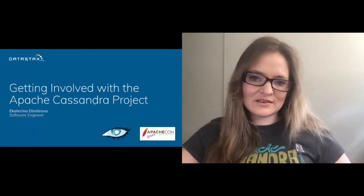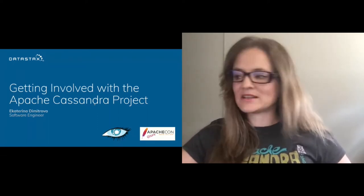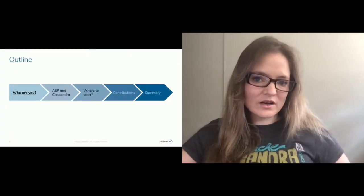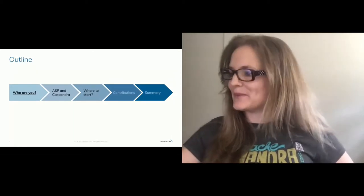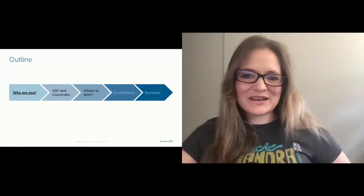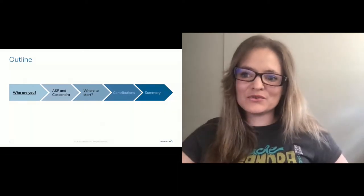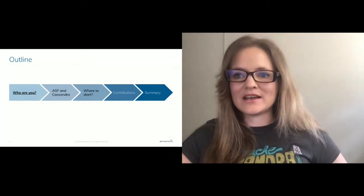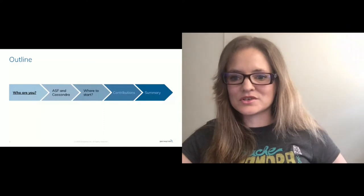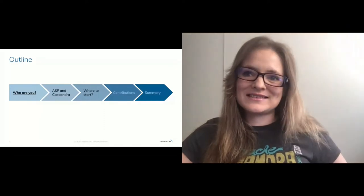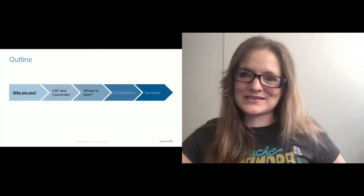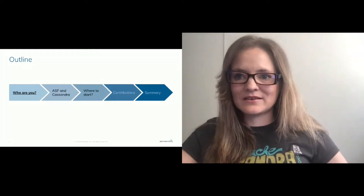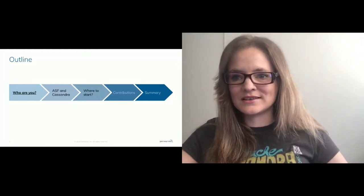The outline of today's talk: first, we are going to talk about who you are and who are the potential new contributors to the project. Then I'm going to say a couple of words around the ASF structure and the Cassandra project. Of course, where to start — because this is the main question for everyone who would like to start contributing. And then we'll discuss the different contributions and the way to approach them.